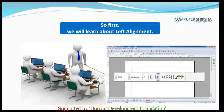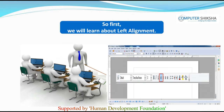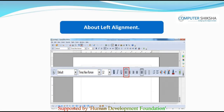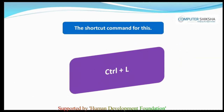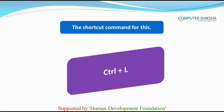Let us now learn about how we use alignment, starting with left alignment. By using the left alignment option, we can ensure that our text and paragraph gets typed from the left side of the page. Whatever text or paragraph you type will appear on the left side. In a writer file, left alignment is actually pre-selected. So, as soon as you start typing, it gets typed from the left side and the cursor also appears on the left side. The shortcut command for this is Ctrl+L.